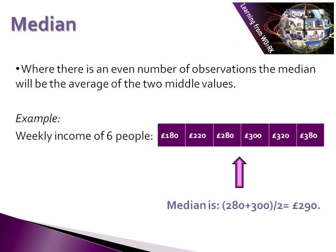When we have an even number of observations, the median is the average of the two middle values. For example, with the weekly income of six people — 180, 220, 280, 300, 320, and 380 pounds — the middle falls somewhere between 280 and 300 pounds. We calculate 280 plus 300 divided by two, giving us 290 pounds as the median value for this group of six.